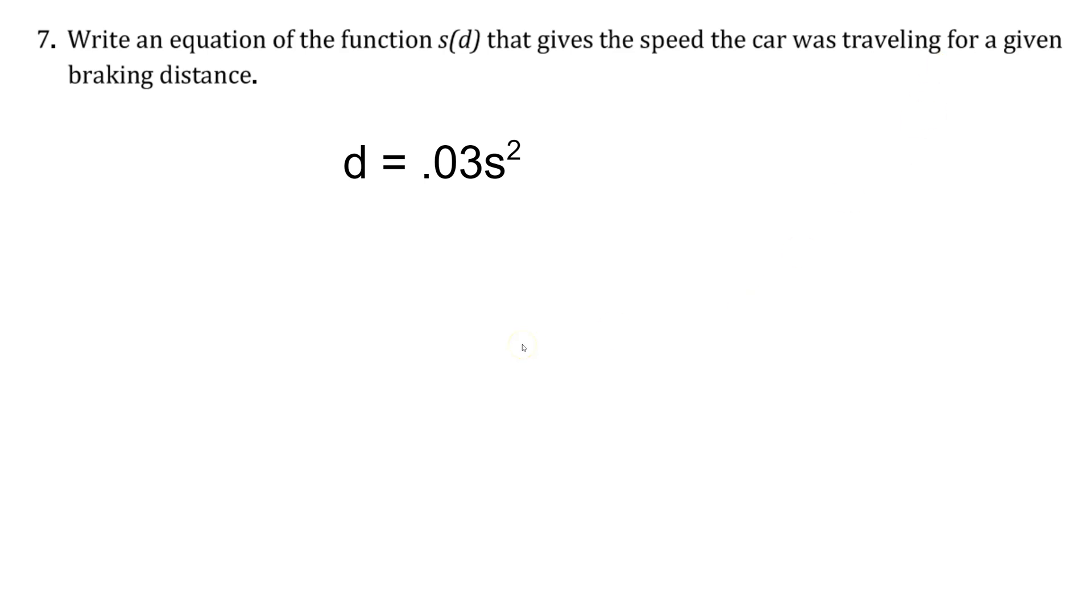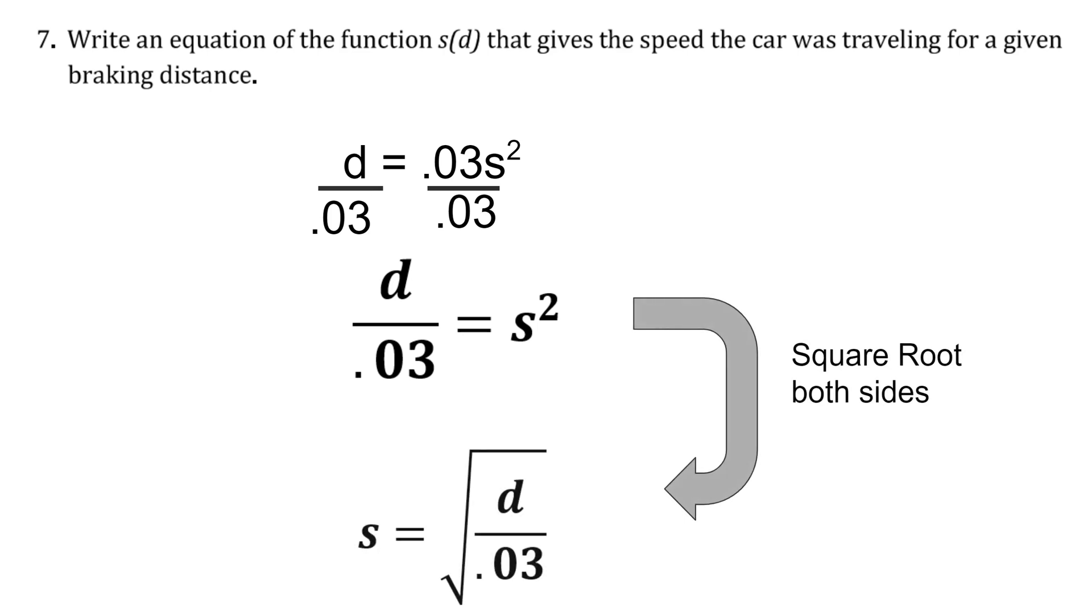Skipping ahead to question seven, it asks us to use that kind of thinking and go ahead and solve this equation for s so that we get a new function that tells us the speed the car was traveling for any braking distance, so an s of d function. So in order to do that, again I'll first divide both sides by 0.03, leaving us with d over 0.03 equals s squared, and then we'll square root both sides of the equation, leaving us with s equals the square root of d divided by 0.03, and to write it in the form they've asked us it would look like what you see in the lower left of your screen.